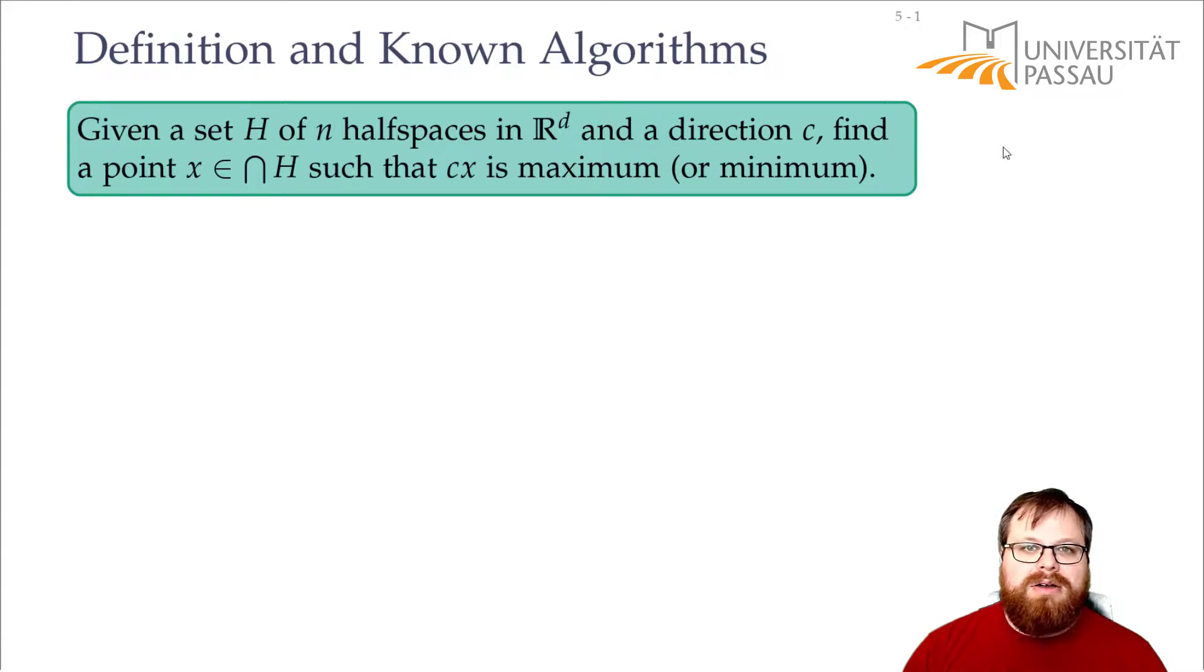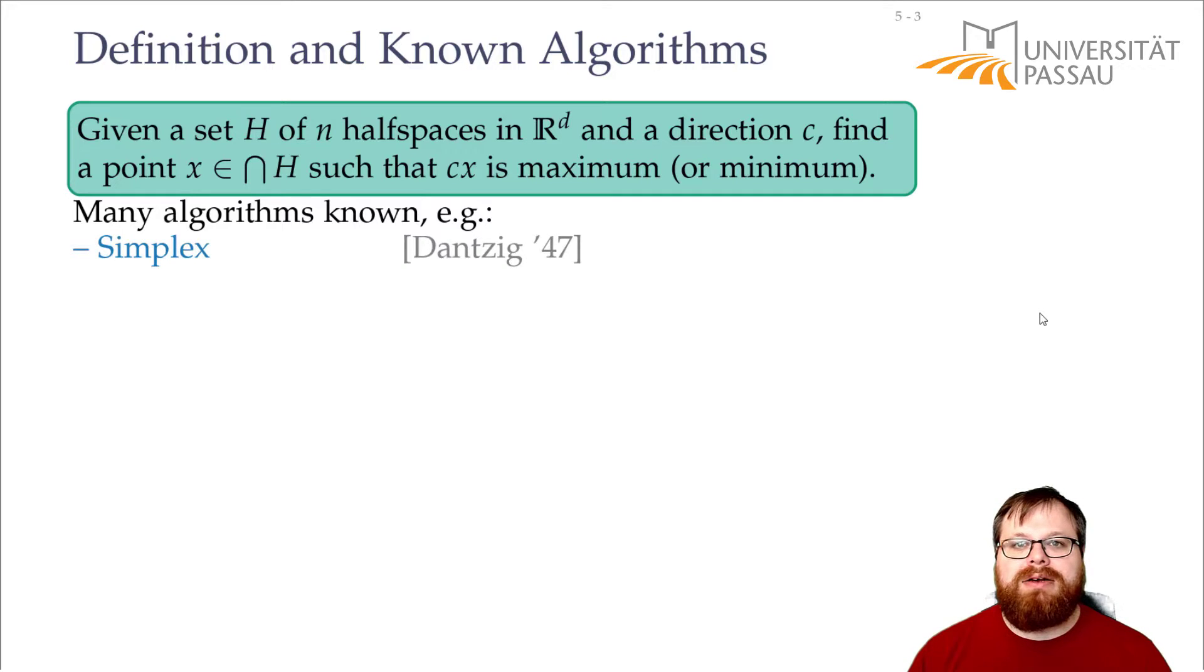There are many algorithms that solve that and the most important ones are probably the following three. The first one is the simplex algorithm by Dantzig from 1947. That algorithm is very good in practice to solve linear programs. It has been shown that random linear programs can be solved in cubic time by this algorithm and that's also usually the behavior when you have practical instances. But in the original version it could be that you don't even get to the optimum solution because it could cycle.